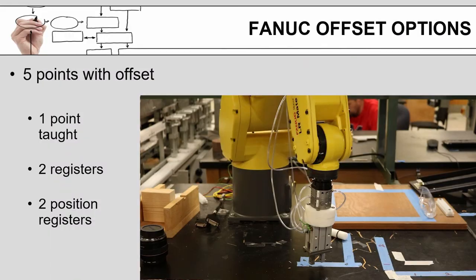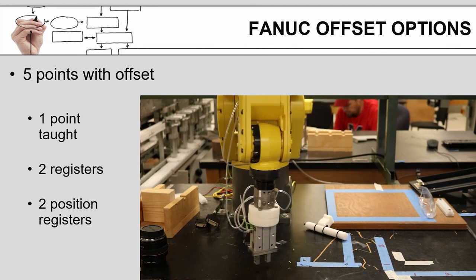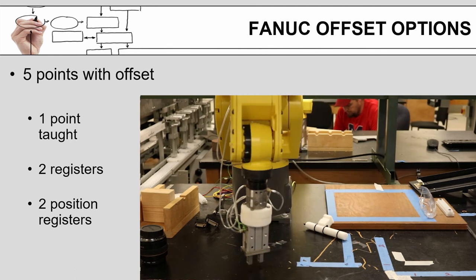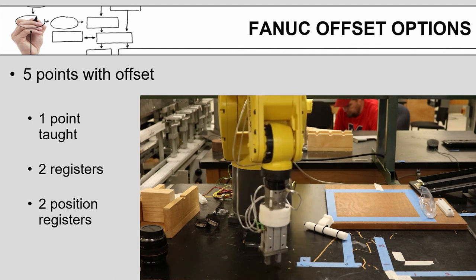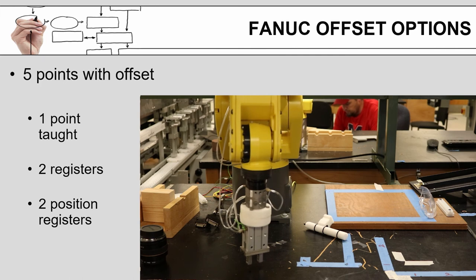This video shows the FANUC robot moving through five points, but with only one taught point, it uses two variables or registers to calculate the position for each subsequent point in the program. The reason for the increase in spacing is that each subsequent offset has been added to the previous offset amount.